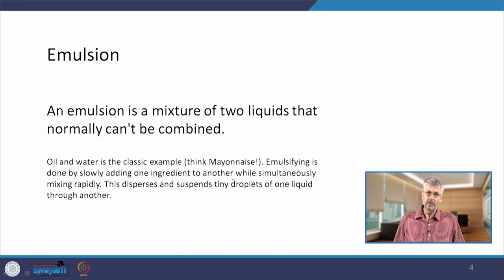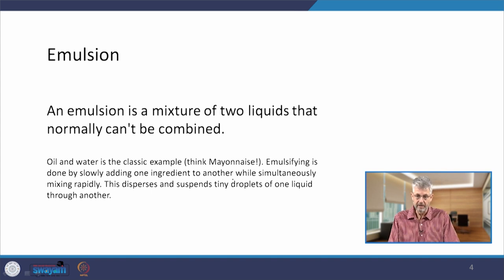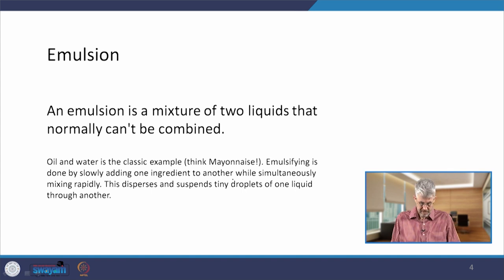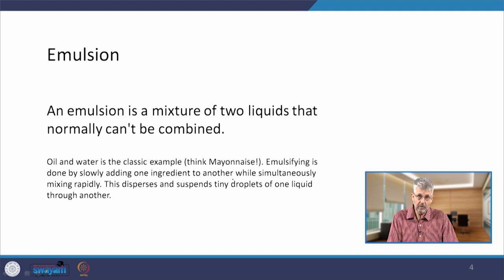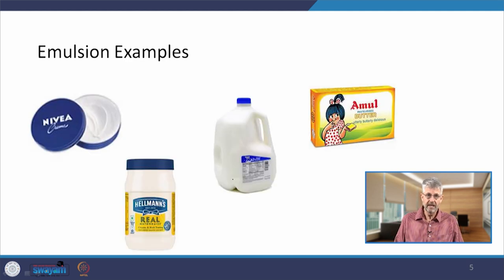Emulsions. An emulsion is a mixture of two liquids that normally cannot be combined — think about oil and water. When you mix oil and water and shake the mixture, you will find that after a little while, the oil separates from the water and floats on top. Think about Italian salad dressing or mayonnaise. Emulsifying is the process by which two liquids are mixed together and rapidly agitated, dispersing and suspending tiny droplets of either water in oil or oil in water. Emulsions are everyday items like cream, mayonnaise, milk, butter, and many more.